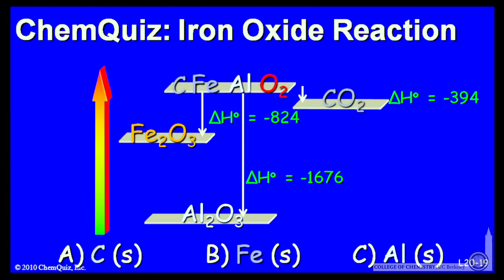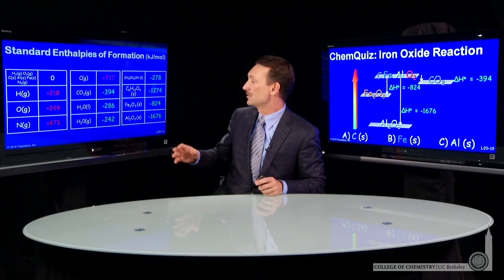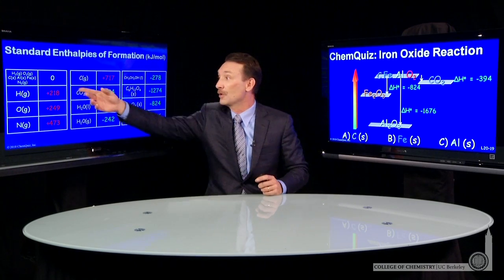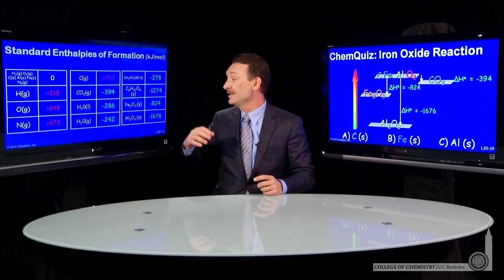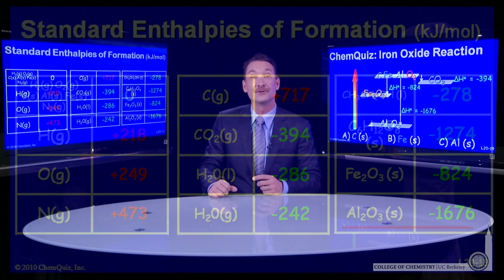Now, aluminum oxide, I'm going to form that from the elements in their standard states. I have to find aluminum oxide on a table of standard enthalpies of formation. Here's aluminum oxide on our table relative to the elements in their standard states. The formation of a mole of aluminum oxide releases 1,676 kilojoules.